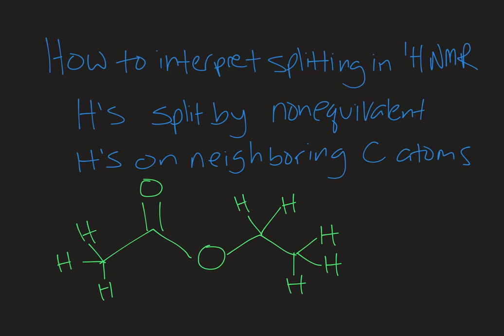Welcome to Chemistry with Caroline. In this video we're going to look at how to interpret splitting in the proton NMR for organic molecules. Splitting refers to how a signal shows up — so is it a singlet, a doublet, a triplet, etc.